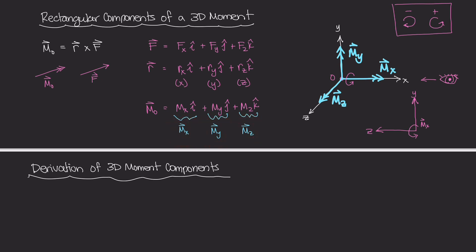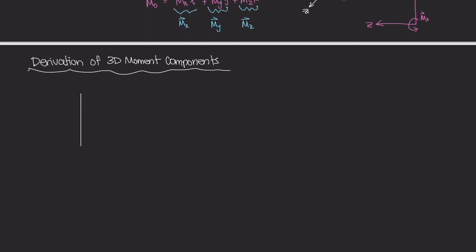Let's say that you have a three-dimensional coordinate system with axes y, x, and z. Right in the middle, you have point O as the origin. From O, you have some position vector r that goes to some point A. And from point A, we have a force vector acting in some direction, causing a three-dimensional moment about point O. This force has components along the x, y, and z axes.